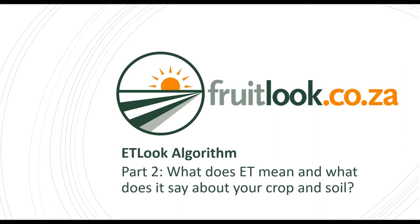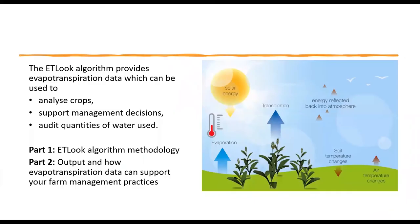In part two of the ETLook algorithm, we will be looking at what ET means and what it says about your crop and soil. The ETLook algorithm provides evapotranspiration data which can be used to analyze crops, support management decisions and audit quantities of water used. Part two looks at the output and how evapotranspiration data can be of support for your farm management practices.